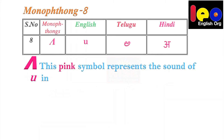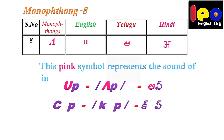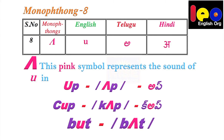Monophthong 8. This pink symbol represents the sound of U in 'up,' the sound of U in 'cup,' and the sound of U in 'butt.' So this symbol must be taken as A.